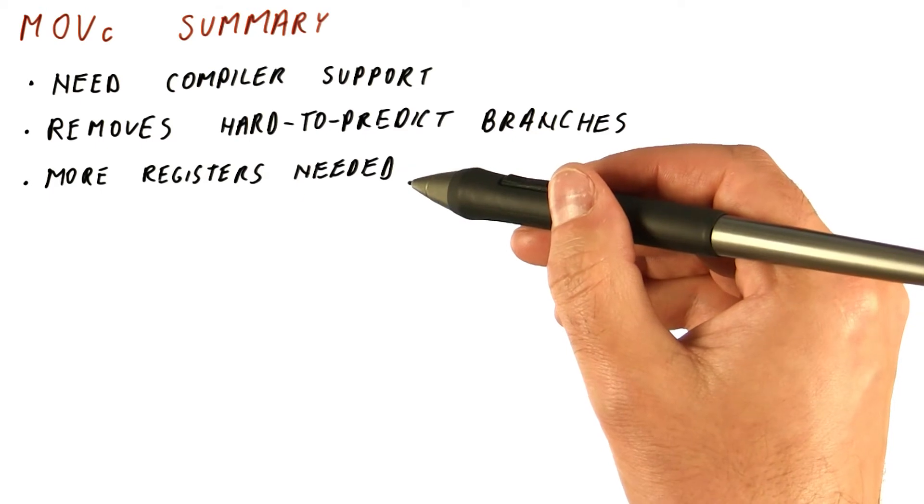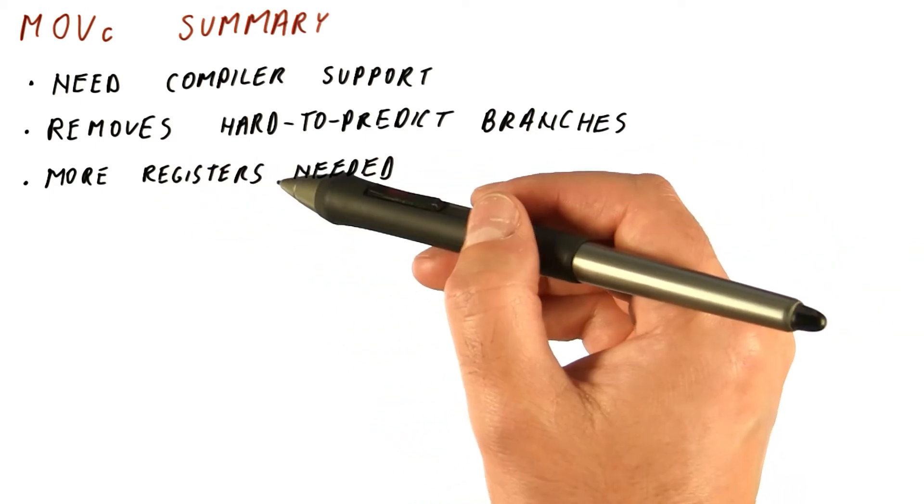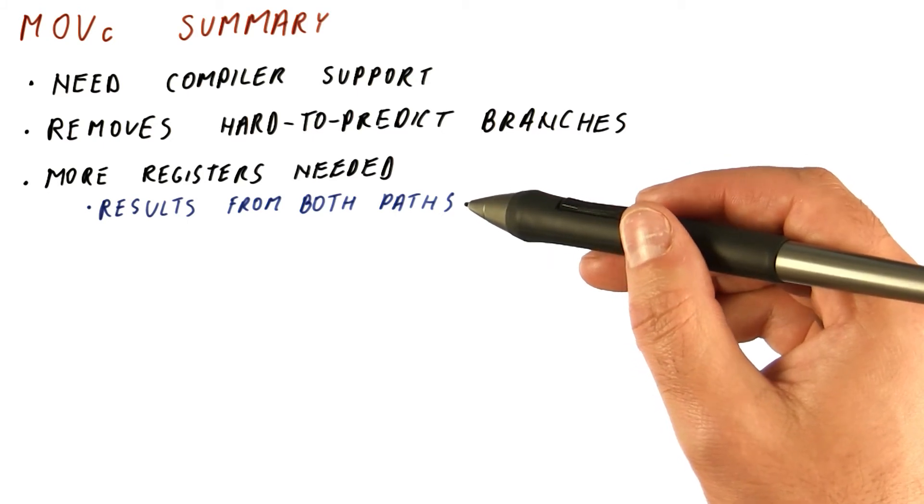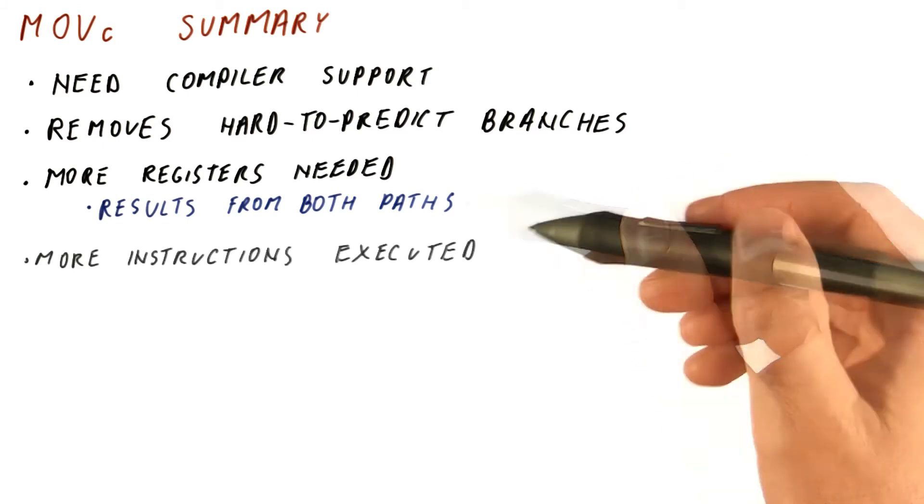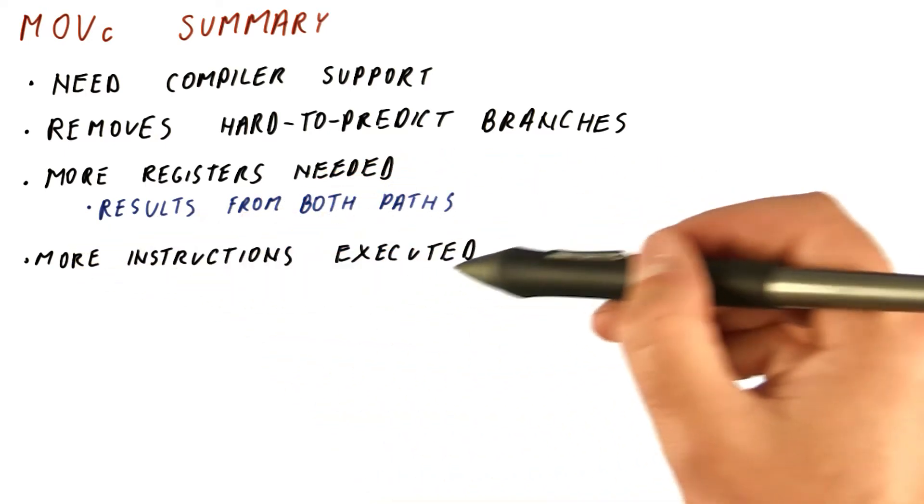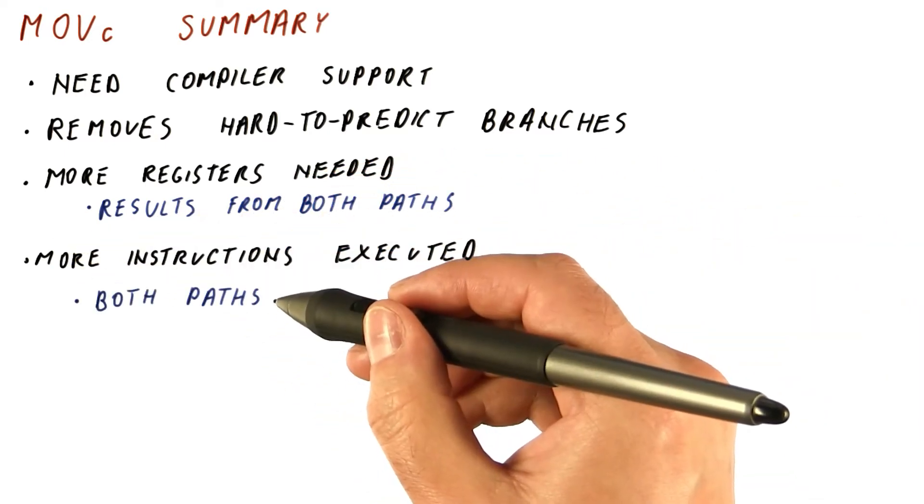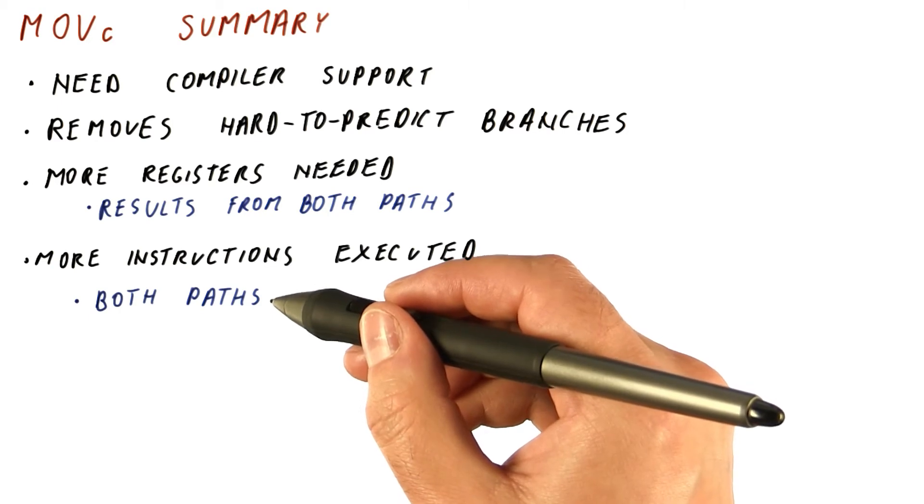If conversion typically requires use of more registers than the original code, because we need to keep all the results from both of the paths. Also, more instructions will be executed as a result of if conversion, because we are executing instructions from both paths, not just one.